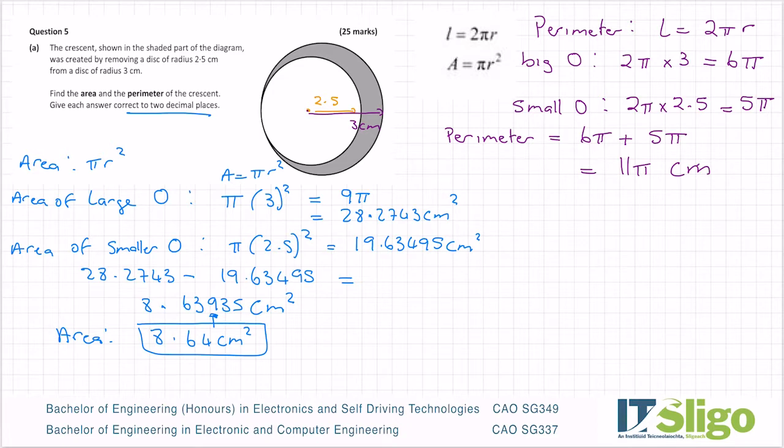Therefore the perimeter is 6π plus 5π, which is 11π. It'd just be centimeters in this case because it's just the length, so it's not an area. It's not centimeters cubed. Now, to leave it as 11π would be incorrect because the question says two decimal places, so at some stage you do have to multiply in the π.